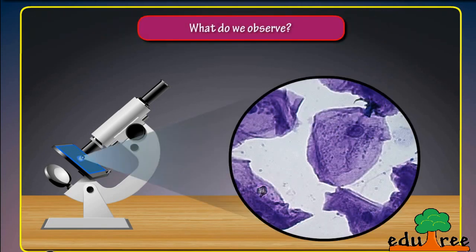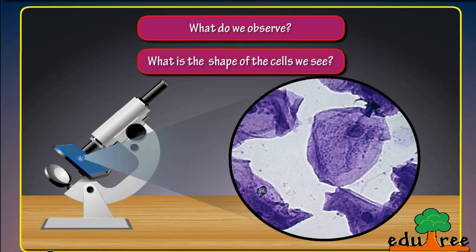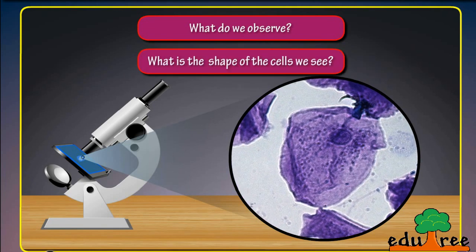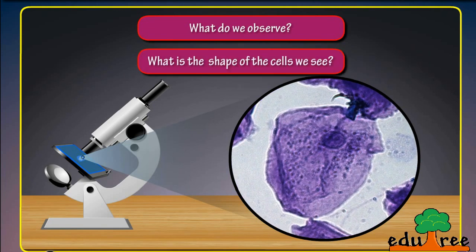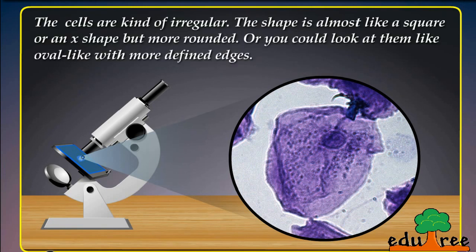What do we observe? What is the shape of the cells we see? The cells are kind of irregular. The shape is almost like a square or an X shape but more rounded, or you could look at them like oval-like with more defined edges.